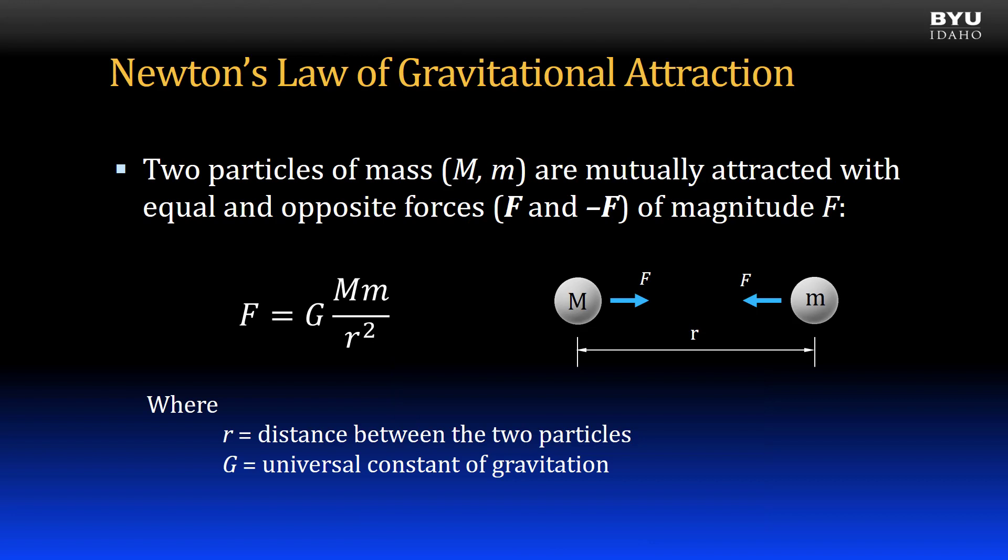Finally, we have Newton's law of gravitational attraction. This law refers to the attraction between two masses, and that attraction is equal and opposite. The attraction is proportional to the mass of the particles, the radius, or distance between the two particles, and the universal constant of gravitation, capital G. Two particles of mass are mutually attracted with equal and opposite forces of magnitude F as given by the equation shown.